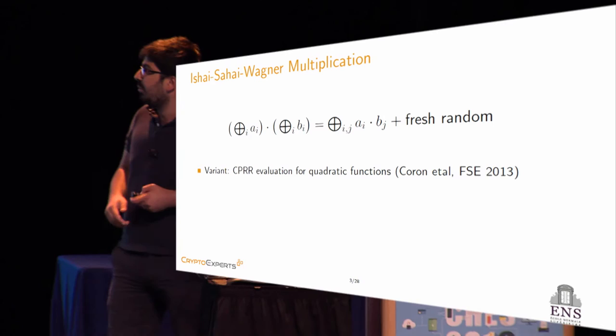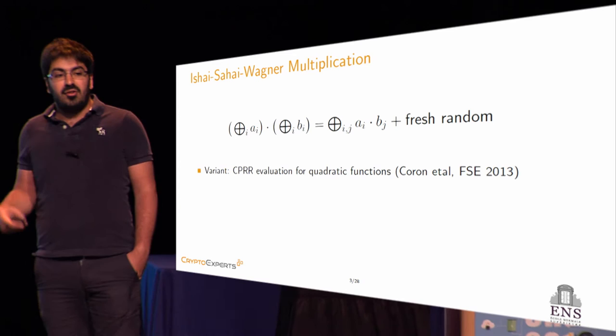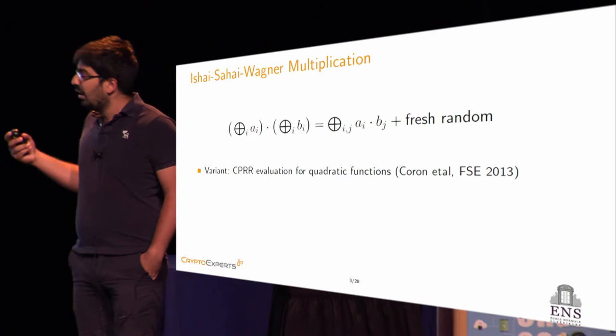Another variant exists called the CPRR evaluation, which allows to securely evaluate any quadratic function. The ISW multiplication and its variant are the main building blocks that we use when we want to efficiently compute S-boxes.